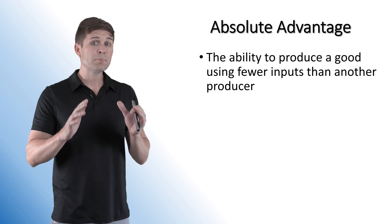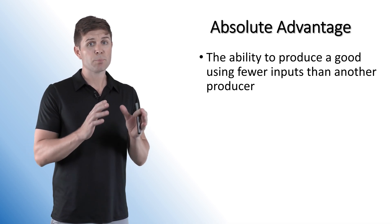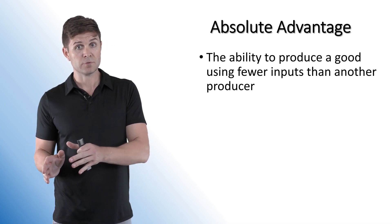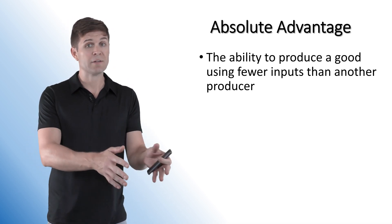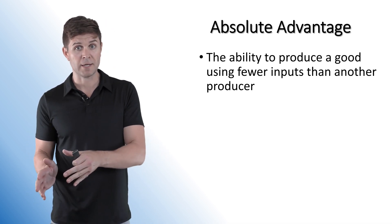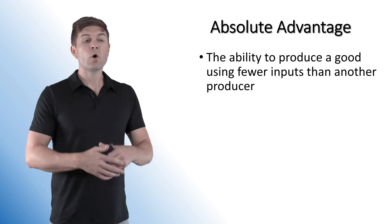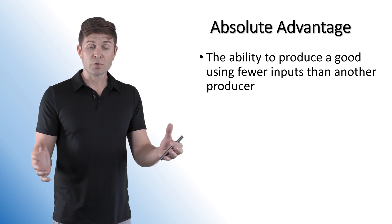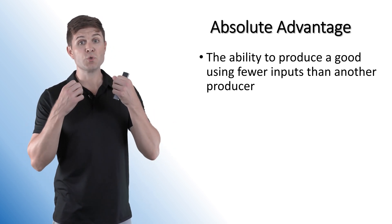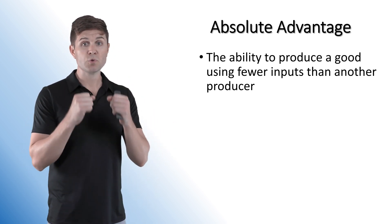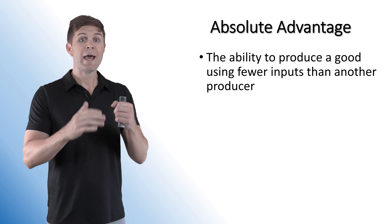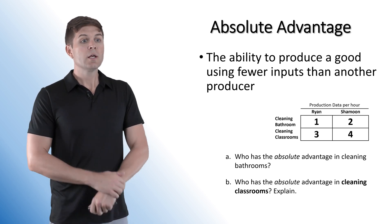Absolute advantage is simply the ability to produce something better than somebody else, or do some task better than somebody else. Given the same amount of resources, whoever can do more, produce more, complete more, has the absolute advantage.